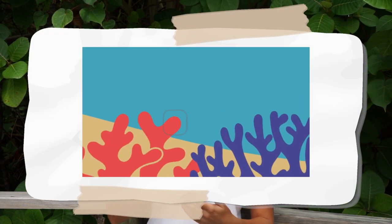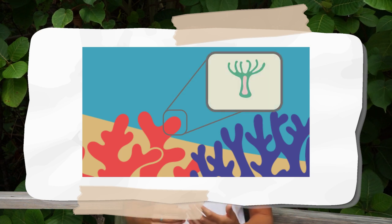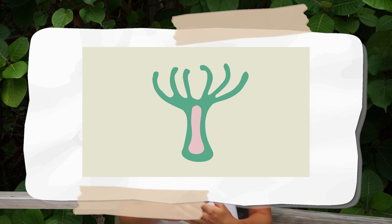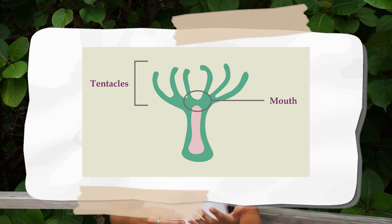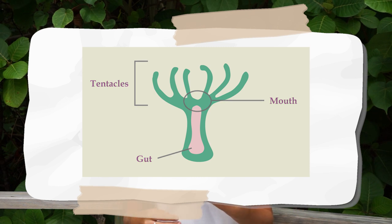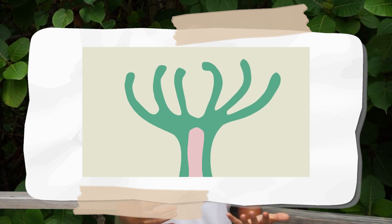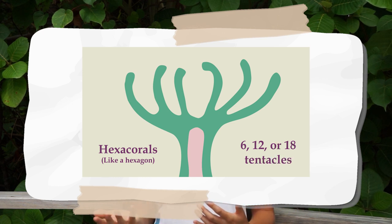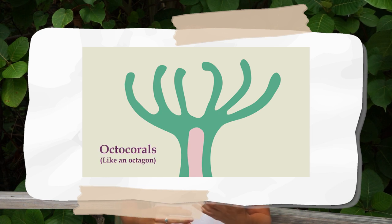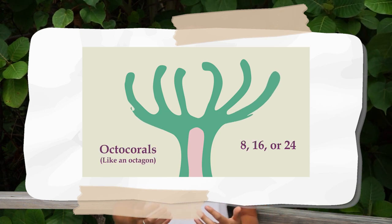But all coral animals are fundamentally the same, and it starts with a small creature called a coral polyp — this is an individual coral animal. All coral polyps have a mouth in the center and tentacles around the outside. They use these tentacles to feed themselves on shrimps or zooplankton, and they also have a gut where they digest this food. The tentacles are also the main difference between hexacorals and octocorals: all corals in hexacorals have tentacles in multiples of 6, such as 6, 12 or 18, while all corals in octocorals have tentacles in multiples of 8, such as 8, 16 or 24.